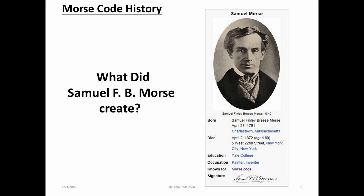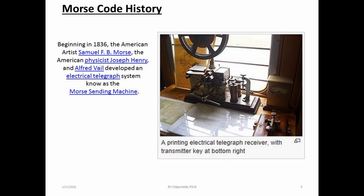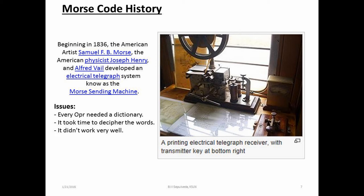What was it that Samuel Morse actually created? Samuel Morse and his team created a Morse sending machine, which would write down numbers in a dot and dash format, which were identified for every word of the English language. A major issue with this format was that every operator had to have an up-to-date dictionary with all the numbers to translate into words, and it took a very long time to decipher the code. The other issue was the machine didn't work very well.